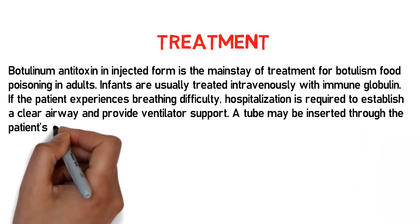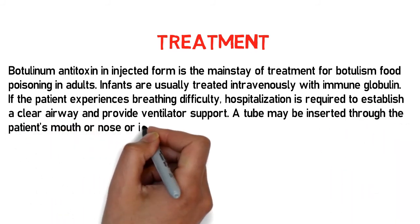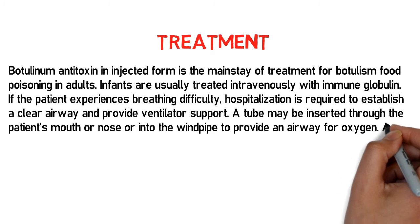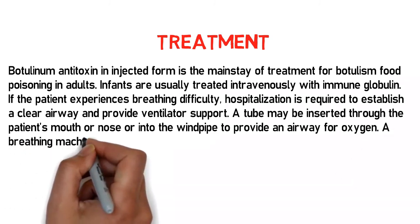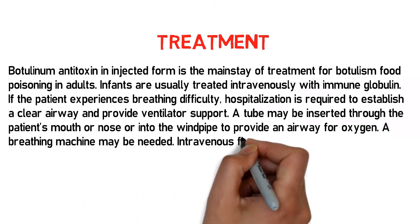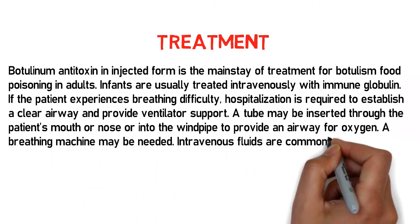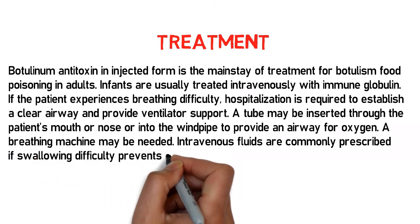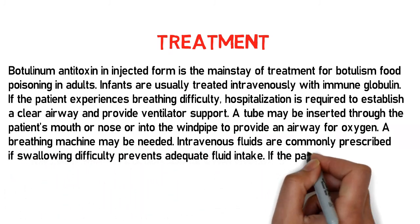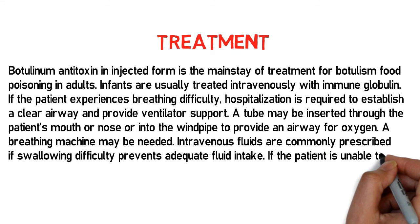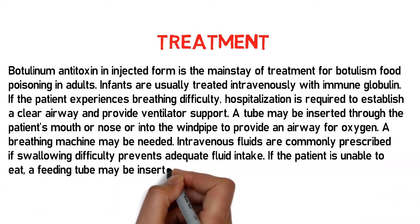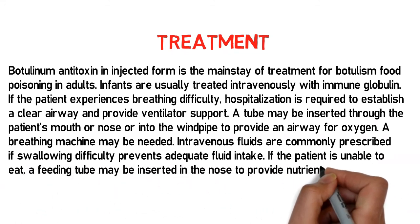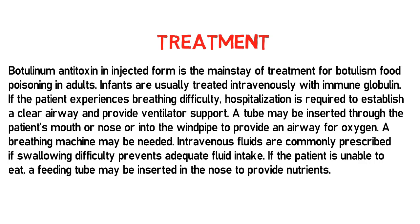A tube may be inserted through the patient's mouth or nose, or into the windpipe, to provide an airway for oxygen, and a breathing machine may be needed. Intravenous fluids are commonly prescribed if swallowing difficulty prevents adequate fluid intake. If the patient is unable to eat, a feeding tube may be inserted in the nose to provide nutrients.